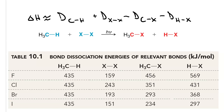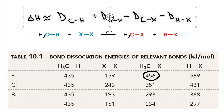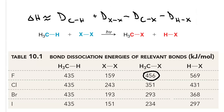A carbon-fluorine bond, at 456 kJ per mole, is exceptionally strong, whereas a carbon-chlorine is 351, a carbon-bromine is 293, and a carbon-iodine is the weakest at 234. The hydrogen-halogen bonds follow the same pattern as the carbon-hydrogen bonds: the shorter the bond, the stronger the bond.